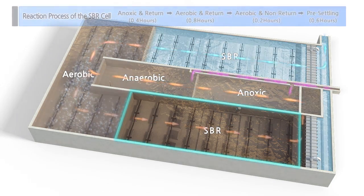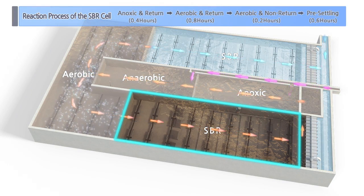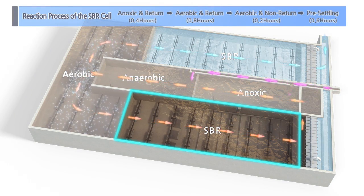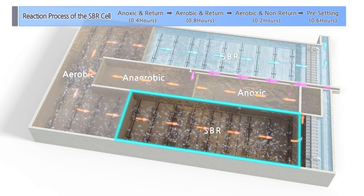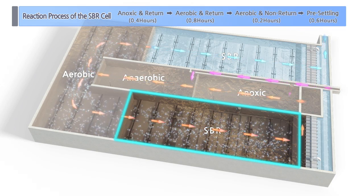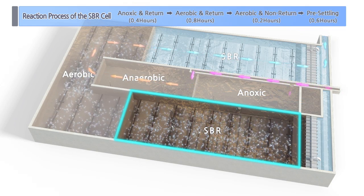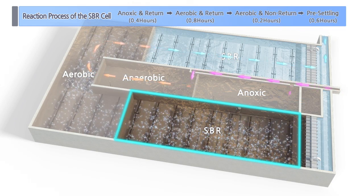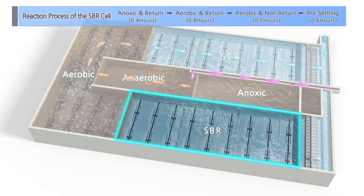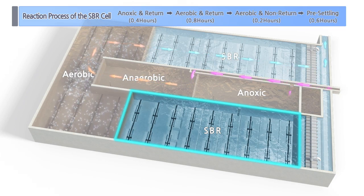The reaction process of the SBR cell consists of four stages: anoxic and return, aerobic and return, aerobic and non-return, and pre-settling.